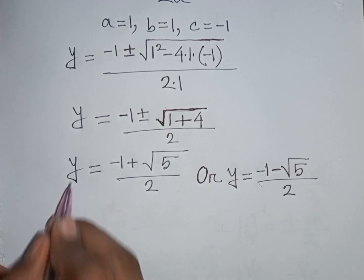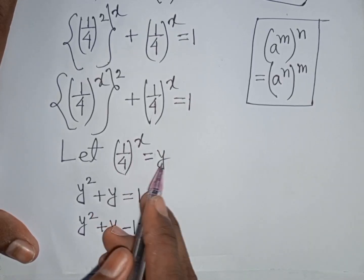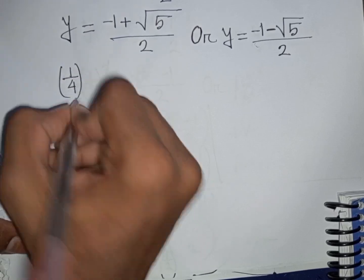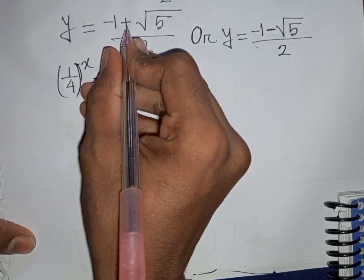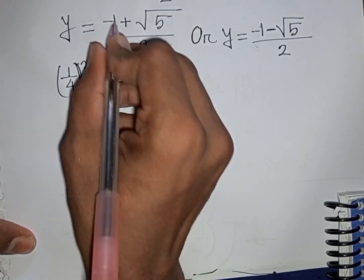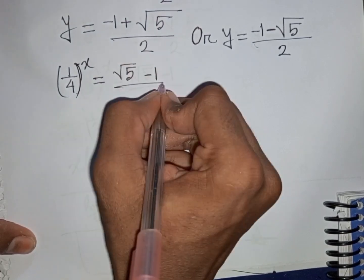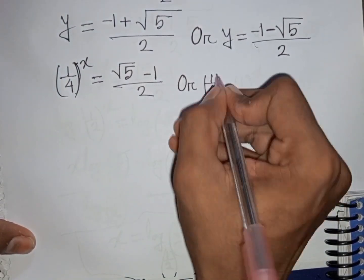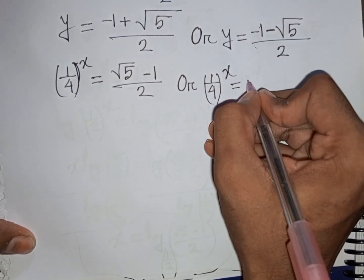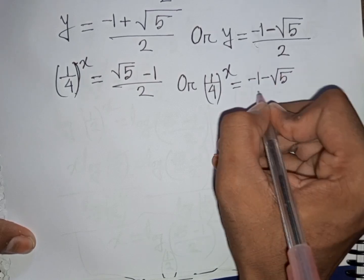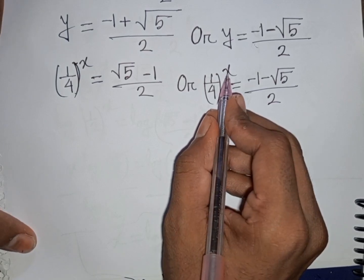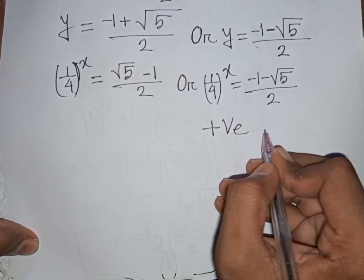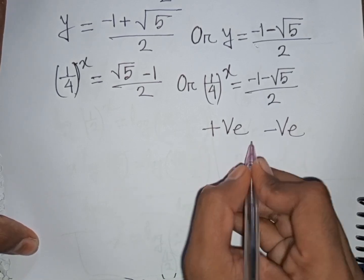Now substituting back: y = (1/4)^x. Since (1/4)^x is always positive for any value of x, but (-1 - √5)/2 is negative, a positive value cannot equal a negative value. So this second case is rejected.